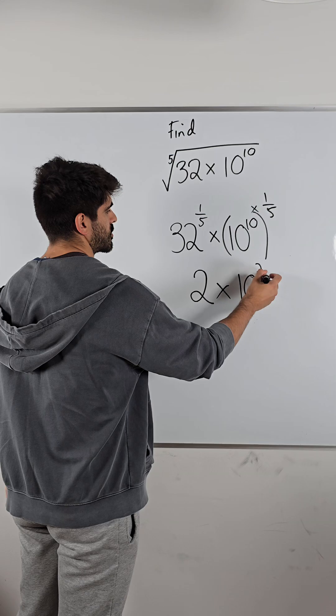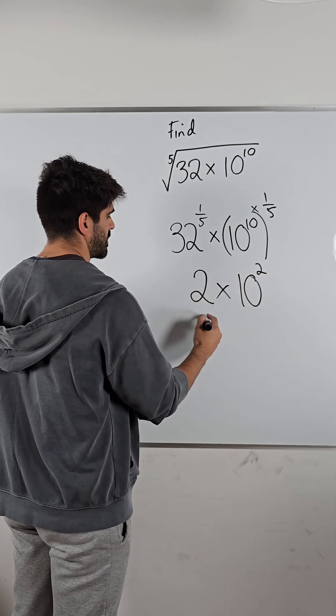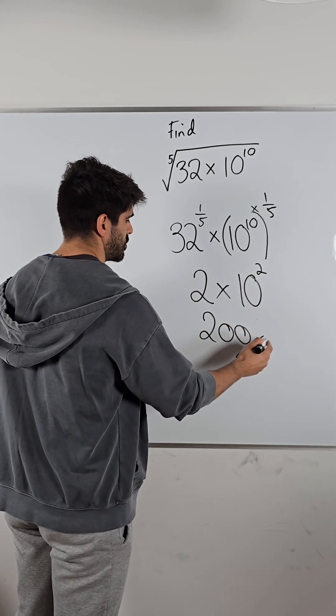A fifth of 10 is 2. That's just 100. 100 times 2, 200. There's your answer.